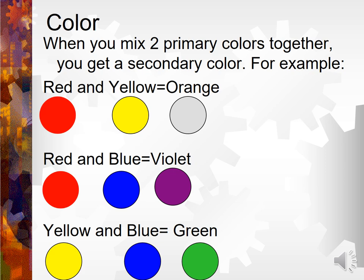When you mix two primary colors together, you get a secondary color. For example, when you mix red and yellow, you get orange. When you mix red and blue, you get purple. When you mix yellow and blue, you get green.